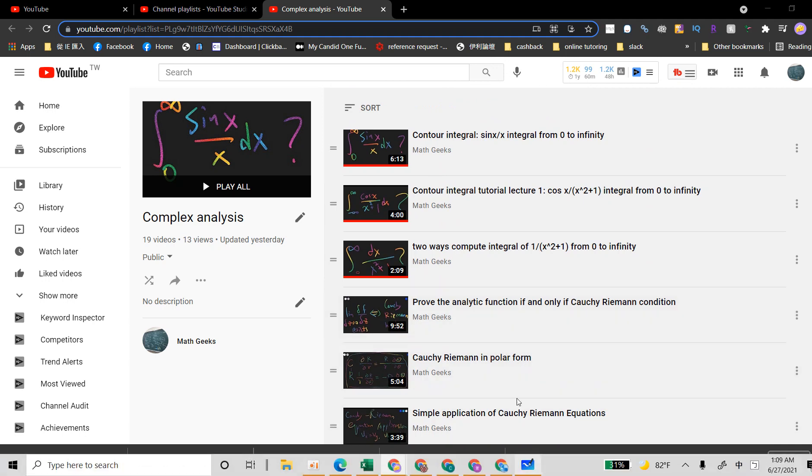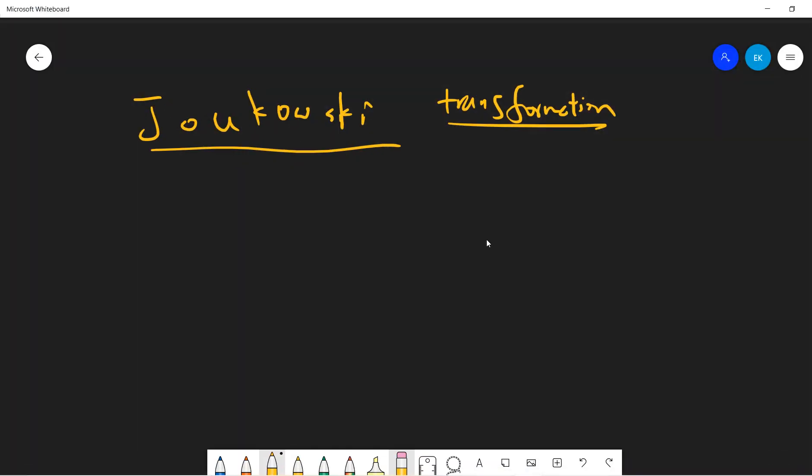OK, yeah. So this is a short video about Joukowski Transformation. And we will do some examples and talk about why Joukowski is important. OK, so now let's talk about definition. I hope you guys subscribe. So let's define omega to be z plus 1 over z. This is called the Joukowski.